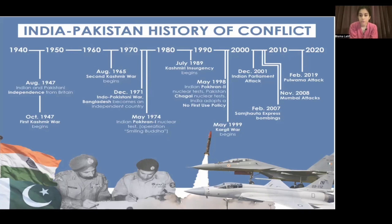In 2001, there was an attack on the Indian Parliament in New Delhi. Armed terrorists killed nine people in the Indian Parliament building. India blamed Pakistan, saying that because of your terrorism, our Parliament was attacked.